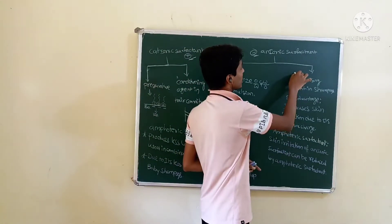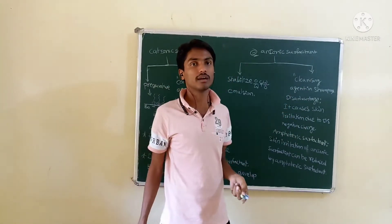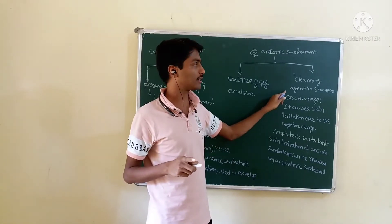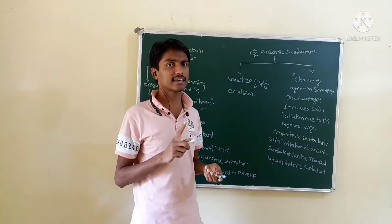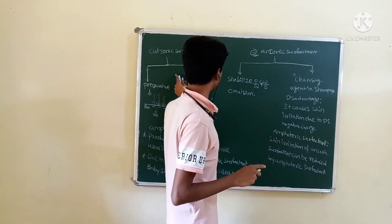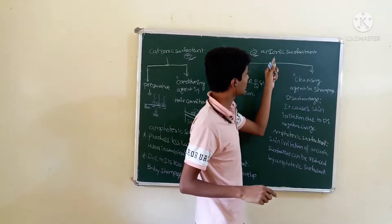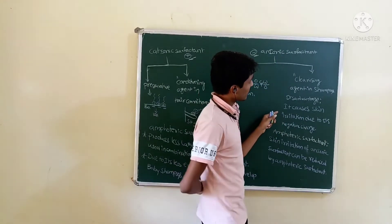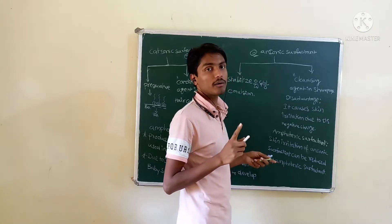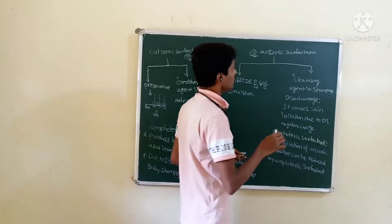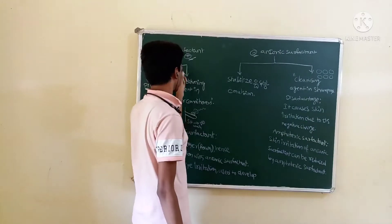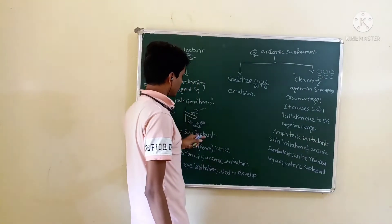Anionic surfactant is used as a cleansing agent in shampoo — note that the conditioning agent in hair conditioners is cationic, while the cleansing agent in shampoo is anionic. The anionic surfactant has the property to form more lather and more foam compared to cationic and amphoteric surfactants.